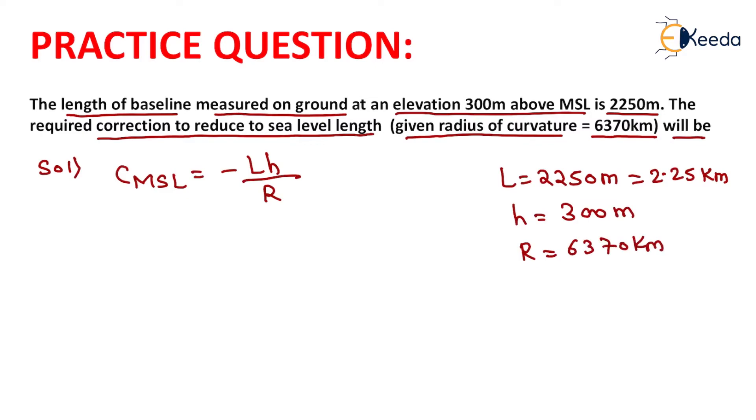Now we will put all this value in our equation, that is minus 2.25 kilometer into 300 meter divided by 6370 kilometer.